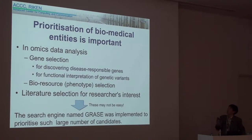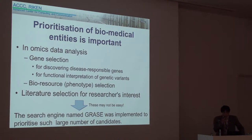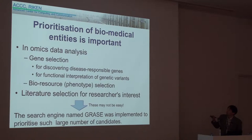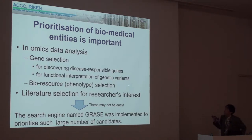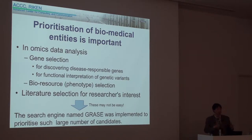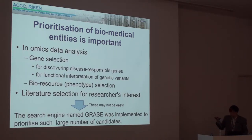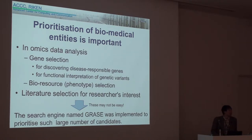Prioritization of biomedical entities is a very important task. In omics data analysis, we are often faced with the selection of a large number of candidates. For instance, the selection for discovering disease-responsible genes for functional interpretation of genetic variants. Bioresource selection is also a fundamental task to plan wet experiments. Moreover, literature selection is still a researcher's fundamental task, and this selection task may not be easy.